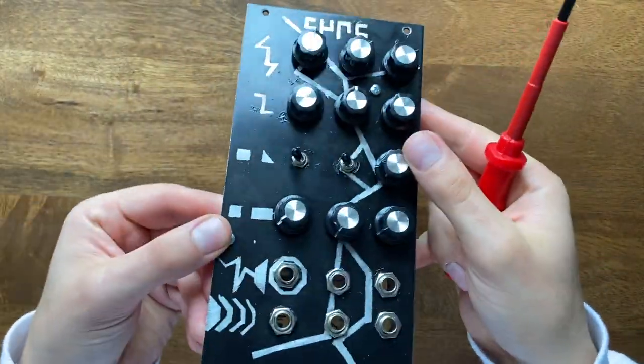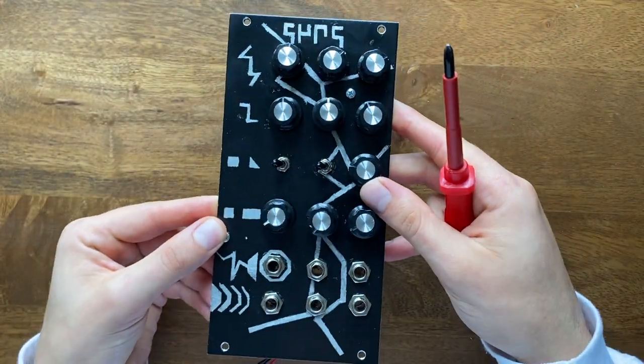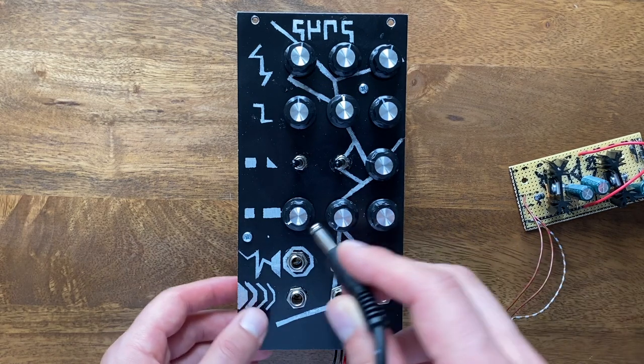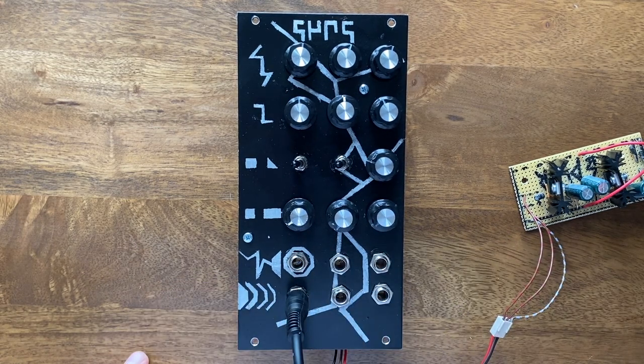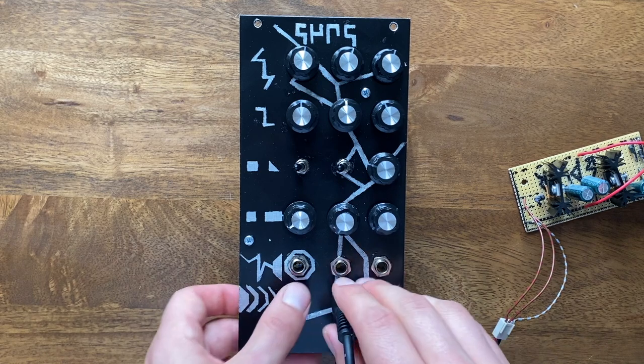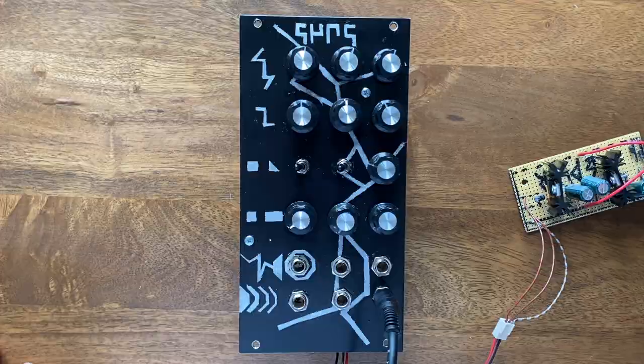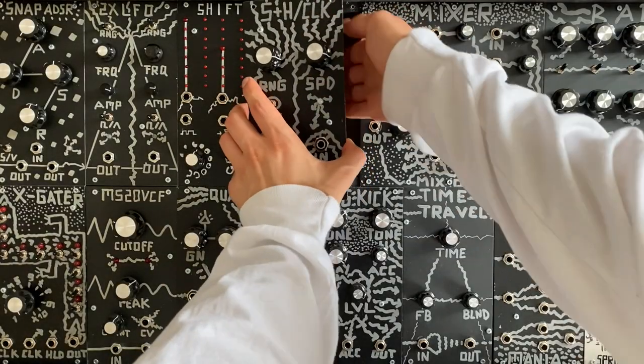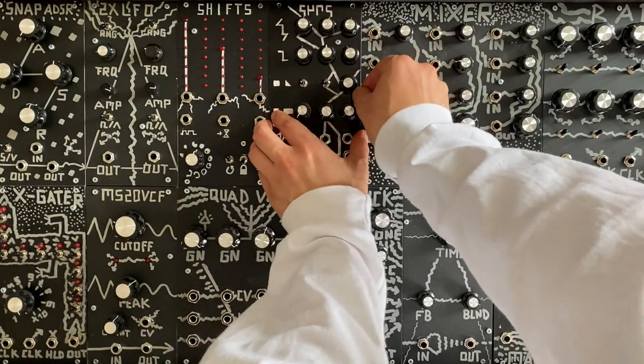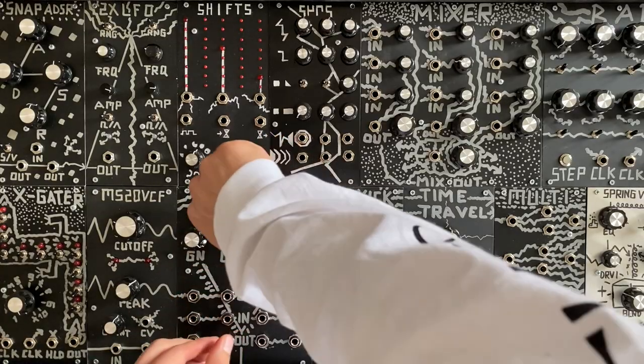And with that, our module is done. But before I put it in my modular, let's make sure that it actually works. So, I'll connect my bench power supply and check if all three oscillators show signs of life. Luckily, they all do. So now, I'll make room in my case and then install the module. If you're interested in how the tuning process works, again, check the other videos in this series. Because I went into it in detail there, I'm going to leave it out here.